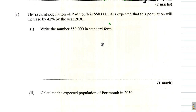Part C says the present population of Portsmouth is 550,000, and it is expected that this population will increase by 42% by the year 2030. Write the number 550,000 in standard form.